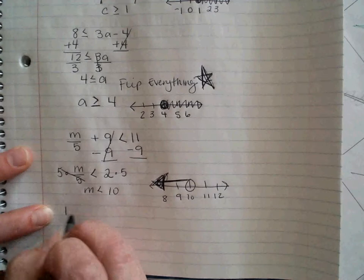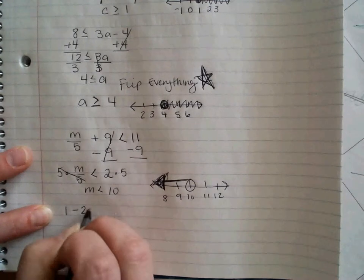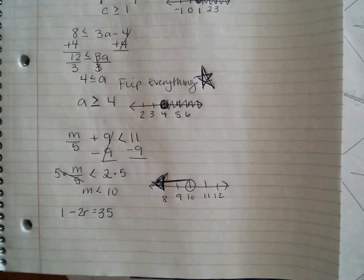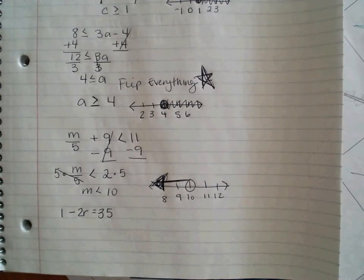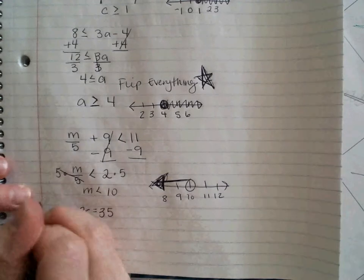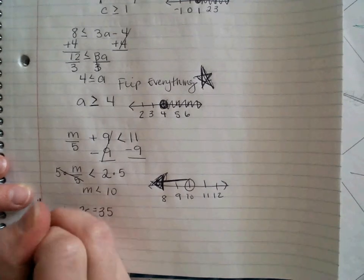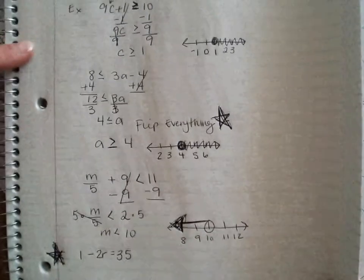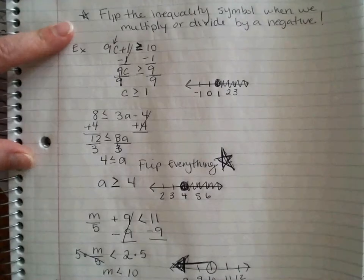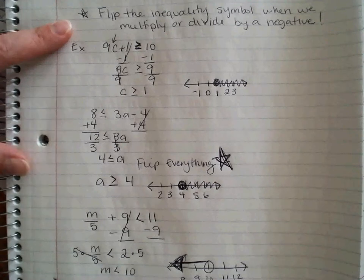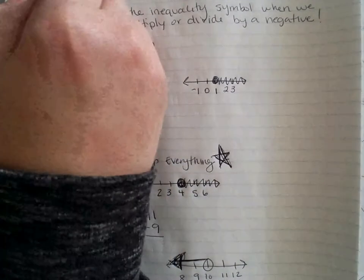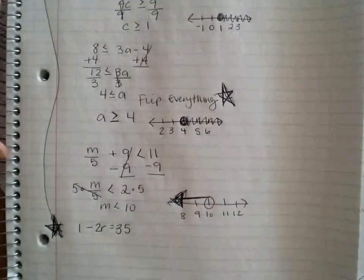Let's look at another one. So I'm going to give you 1 minus 2R equals 35. A couple things here. This is like the one I just told you about when I talked about flipping the inequality when you multiply it by a negative. So this one is bringing in that rule.